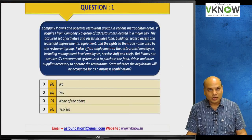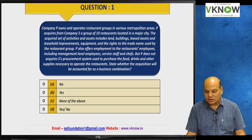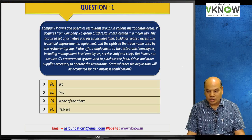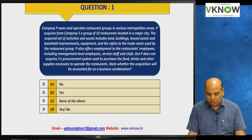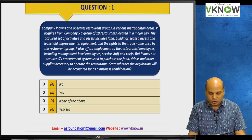First question: Company P owns and operates restaurant groups in various metropolitan areas. P acquires Company S, a group of 10 restaurants located in a major city. The acquired set of activities and assets include land, leased assets and leasehold improvements, equipment, and the right to trade name used by the restaurant group. P also offers employment to the restaurant's employees including management level employees, service staff, and chefs.